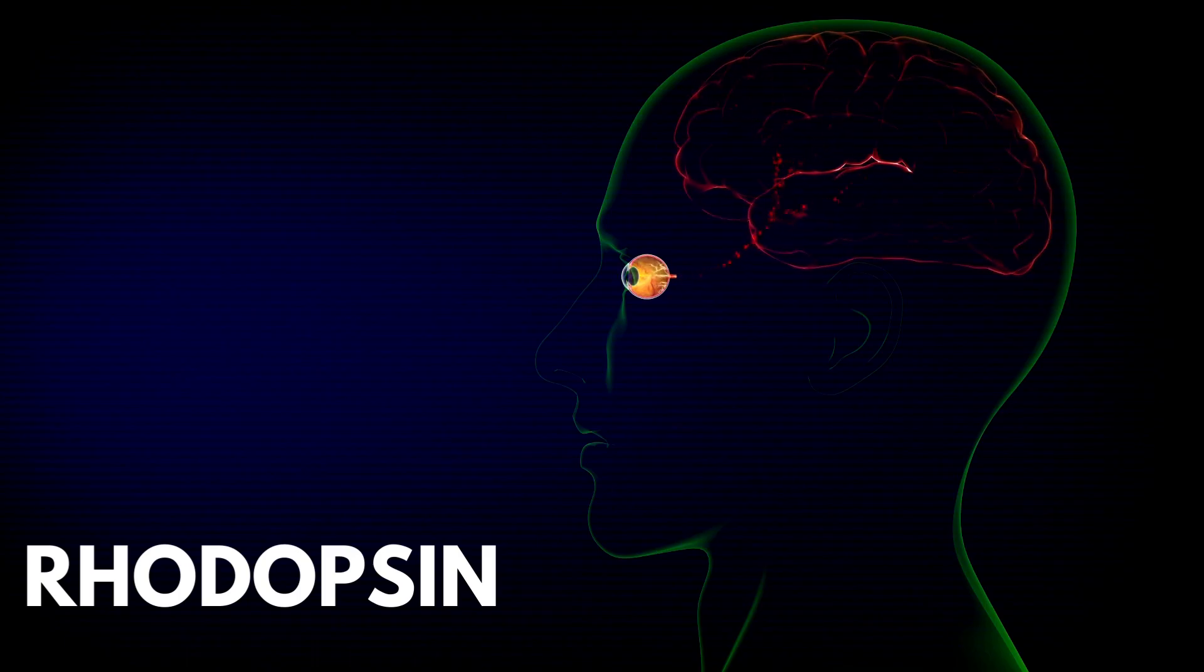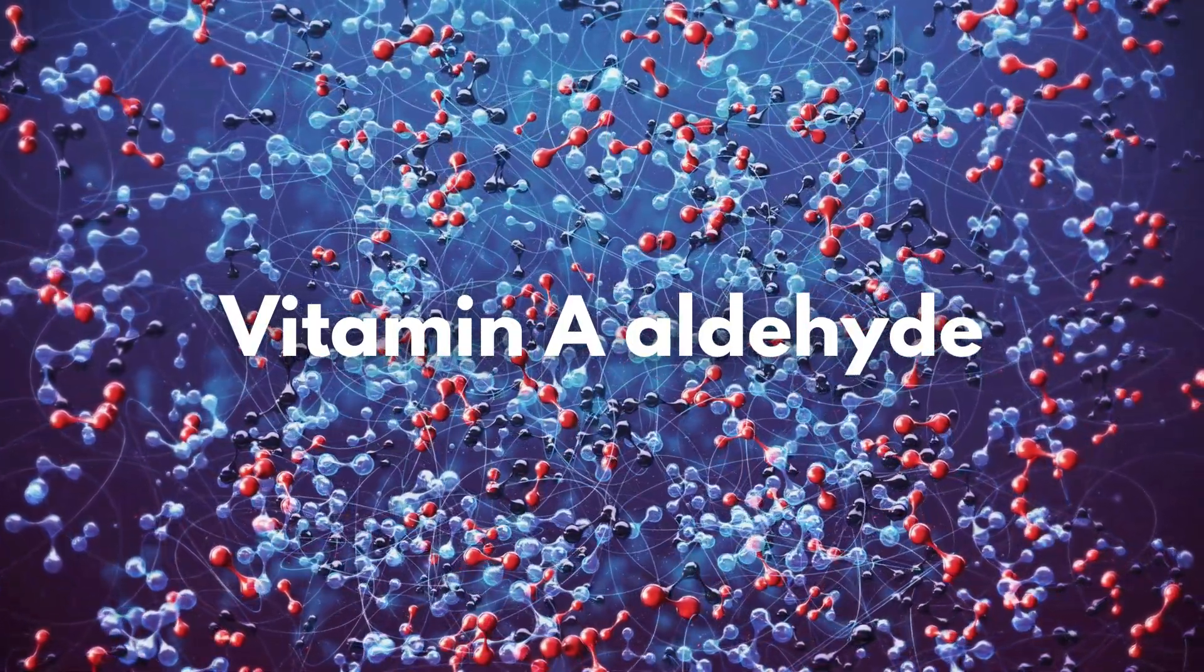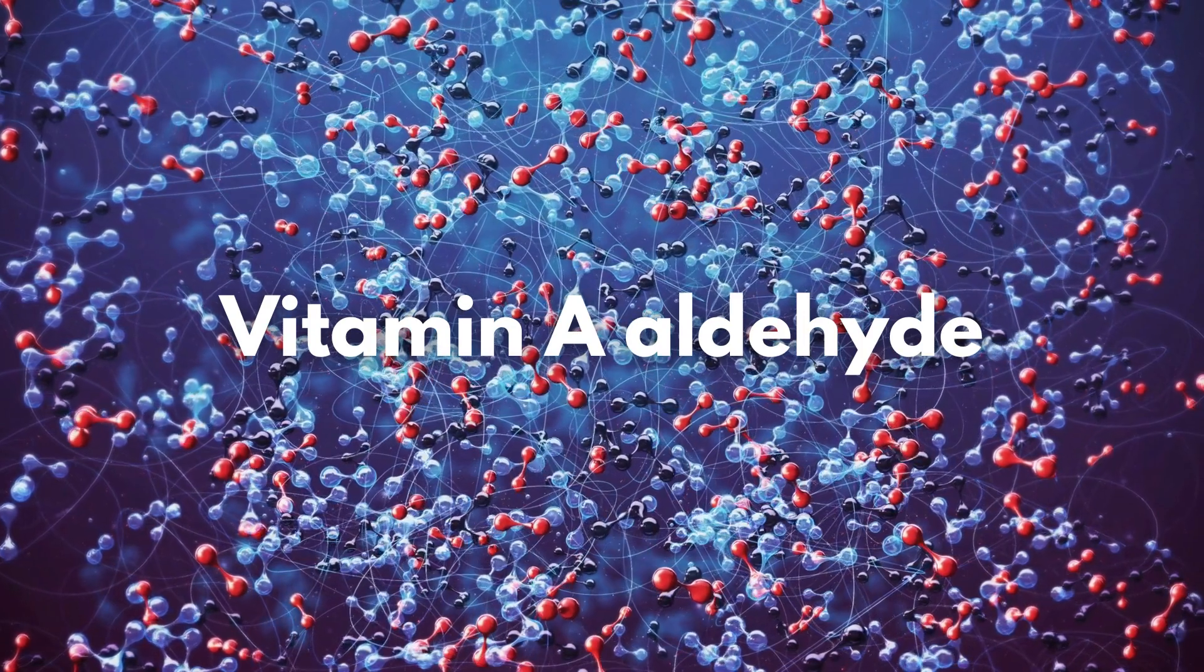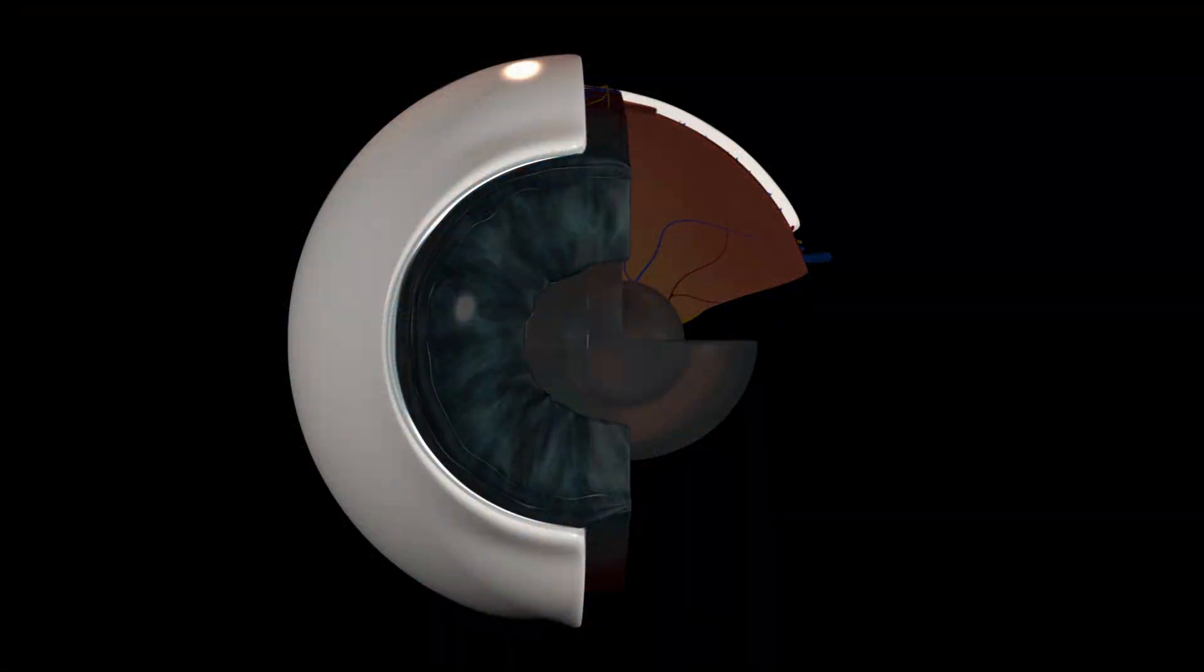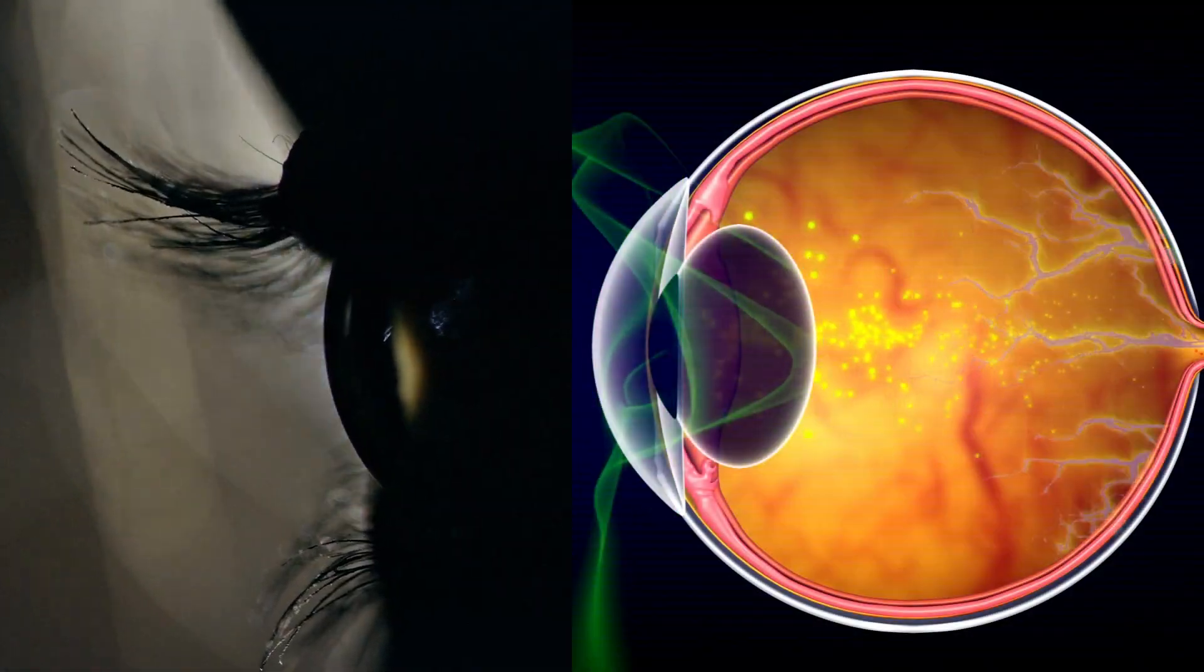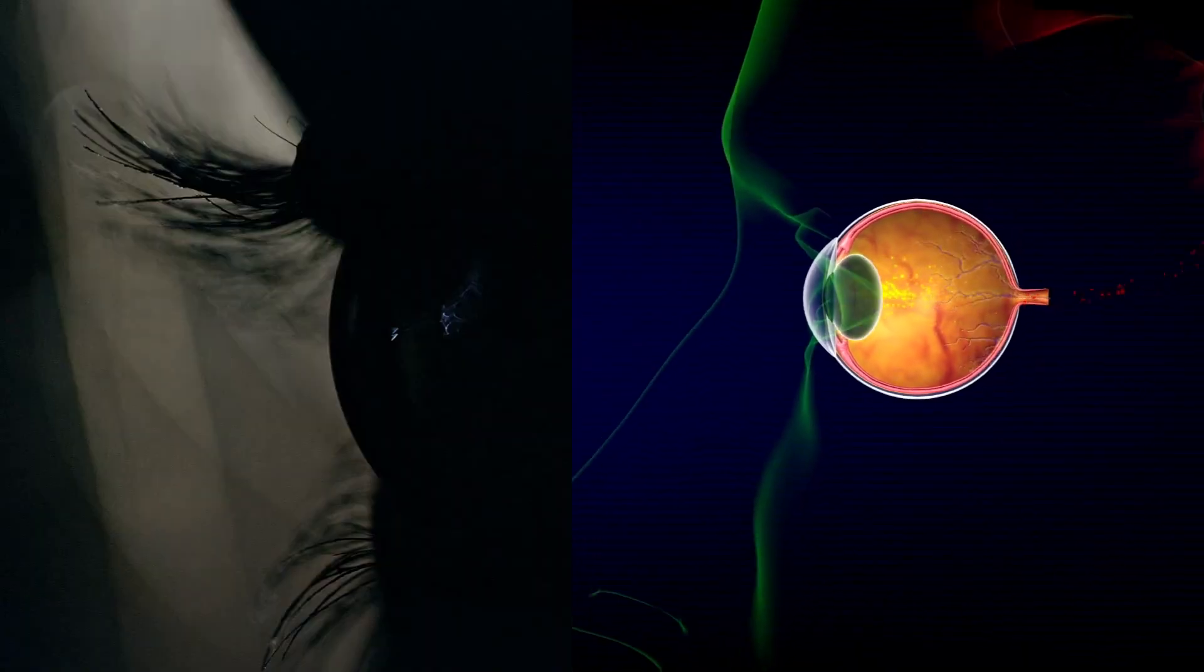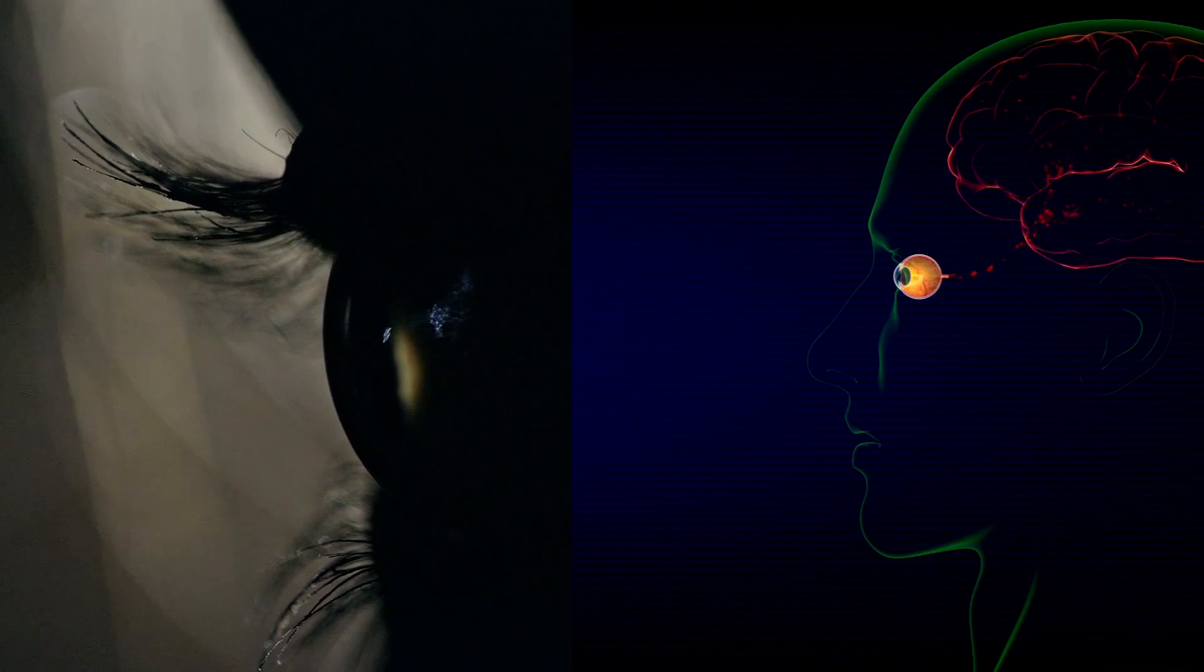Another essential component for vision in low-light conditions is vitamin A aldehyde, which acts as a light-absorbing pigment. A deficiency in vitamin A can lead to night blindness, the inability to see in low light. This happens because the lack of vitamin A aldehyde prevents rhodopsin molecules and rods from functioning properly, impairing scotopic vision.